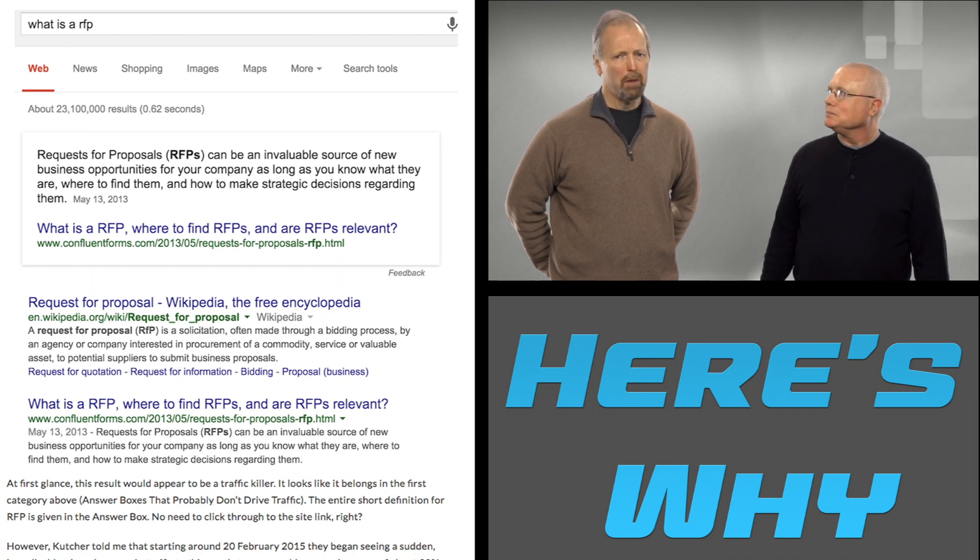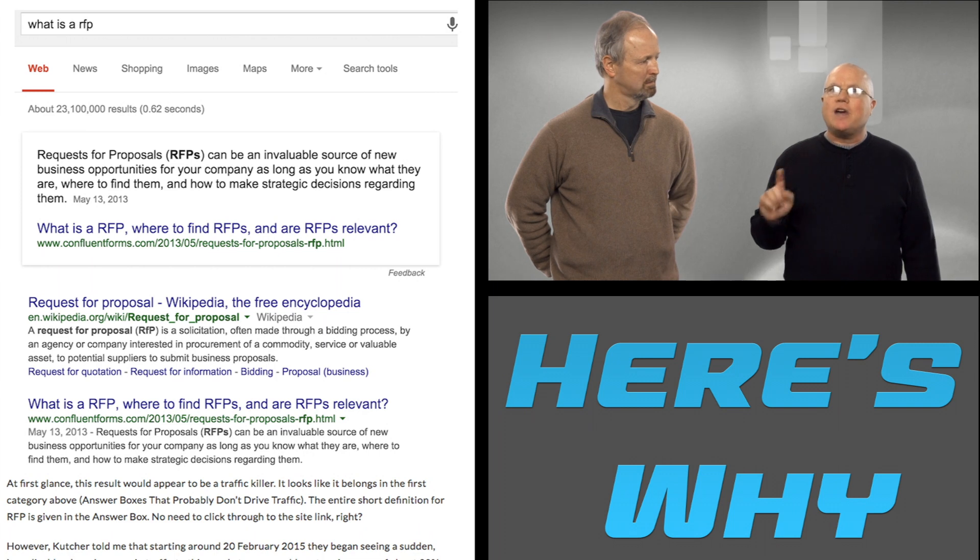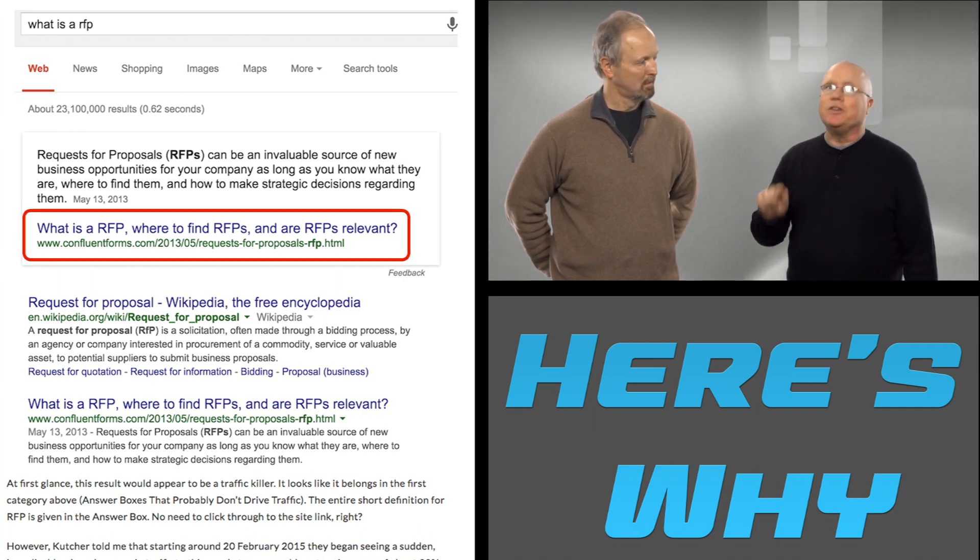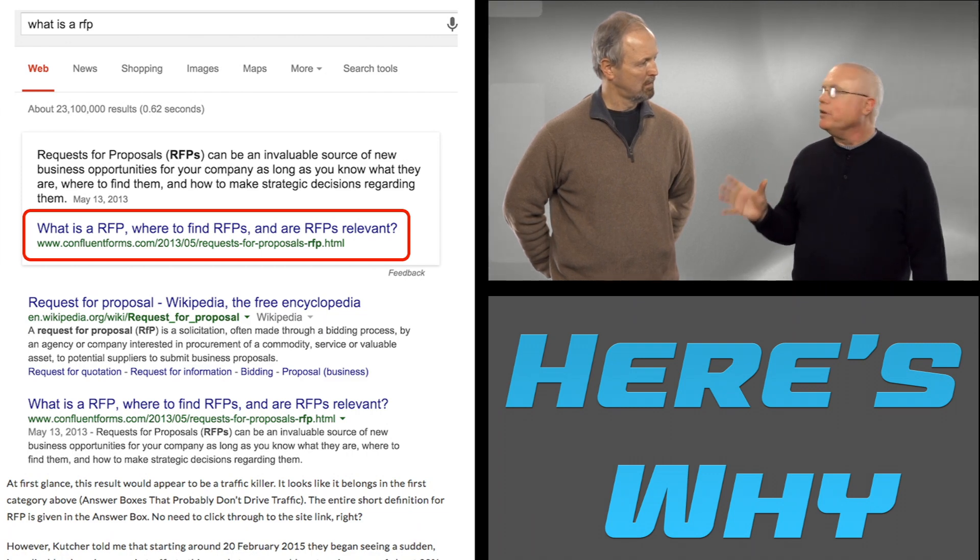So why would they click on the URL then? Well, we can only speculate. But for one thing, the topic of the post that it's linked to is highly technical. It's a good bet that searchers want more than just a one-sentence definition. And look at the title tag that Google used as link anchor text. It cleverly tells you that there is a lot more information in the original post than just a simple definition.